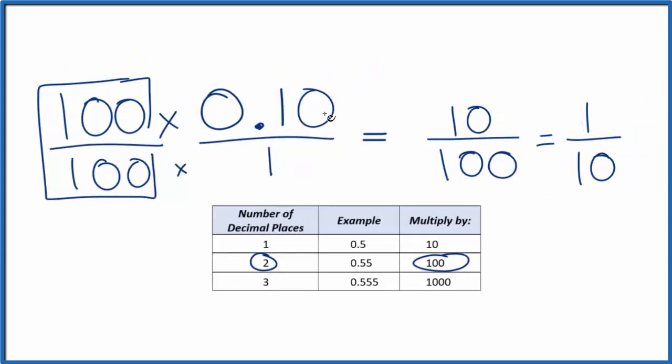So 0.10, that is equal to the fraction 1 tenth, 1 over 10. So that's how you convert 0.10 to a fraction. It's 1 tenth. This is Dr. B. Thanks for watching.